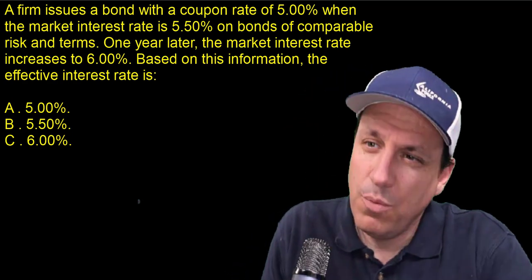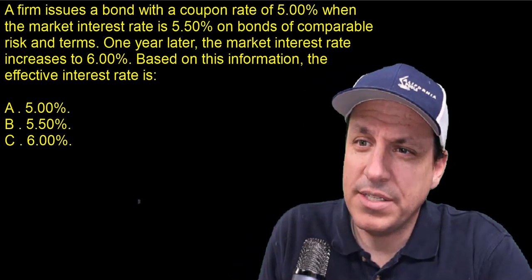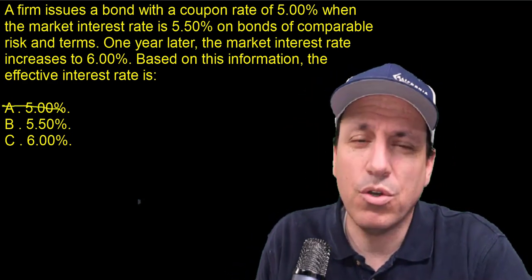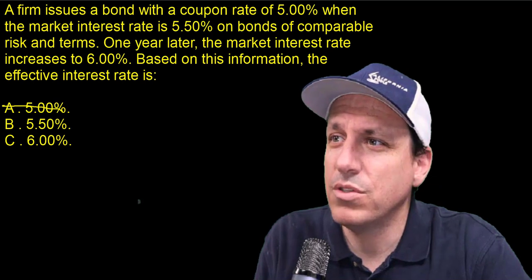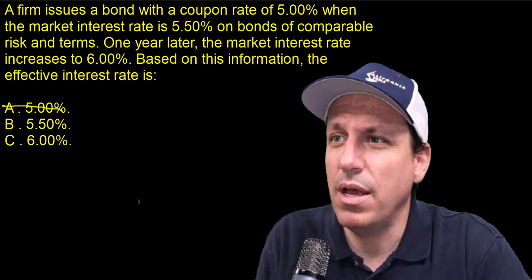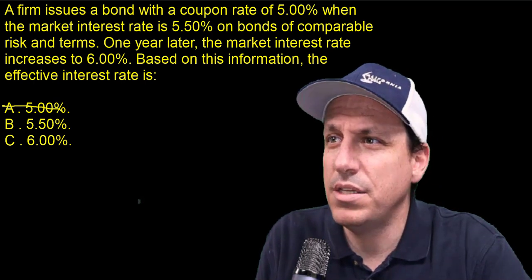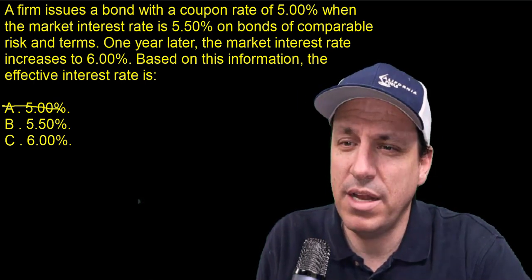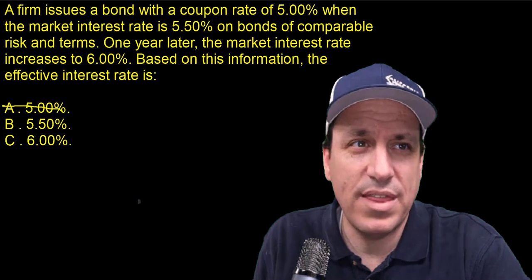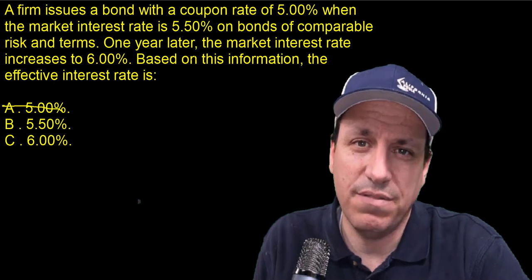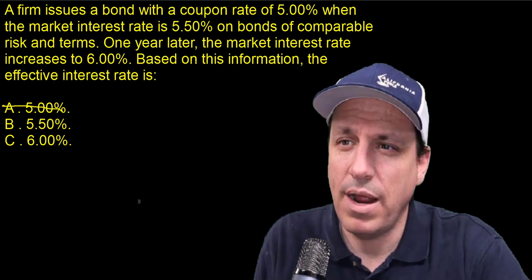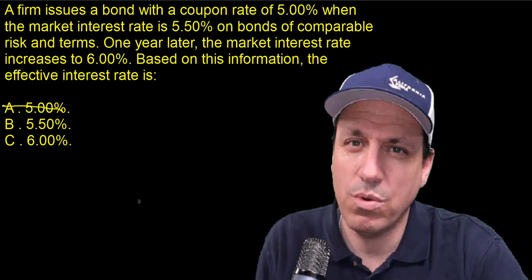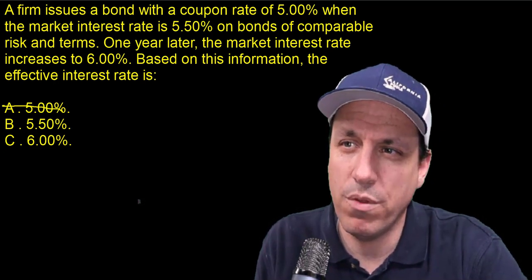You probably can guess that it's not going to be A. That was the coupon rate. So this is a coupon rate of 5% — we know that that's not the effective interest rate. The effective interest rate is what we're talking about for the bond.